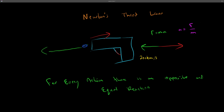This is an example of Newton's Third Law explaining why you move backwards and the bullet goes forward. The relationship between mass and acceleration — why the bullet goes faster and you go slower — is Newton's Second Law.